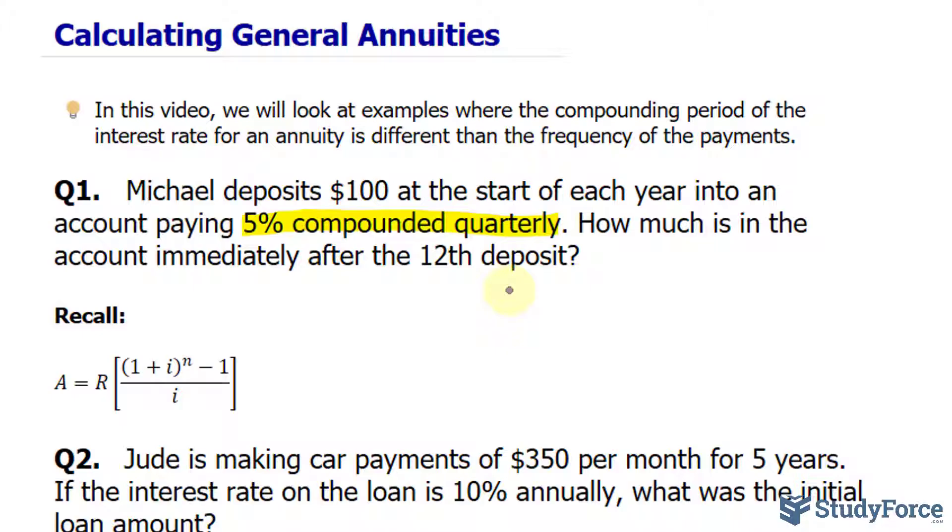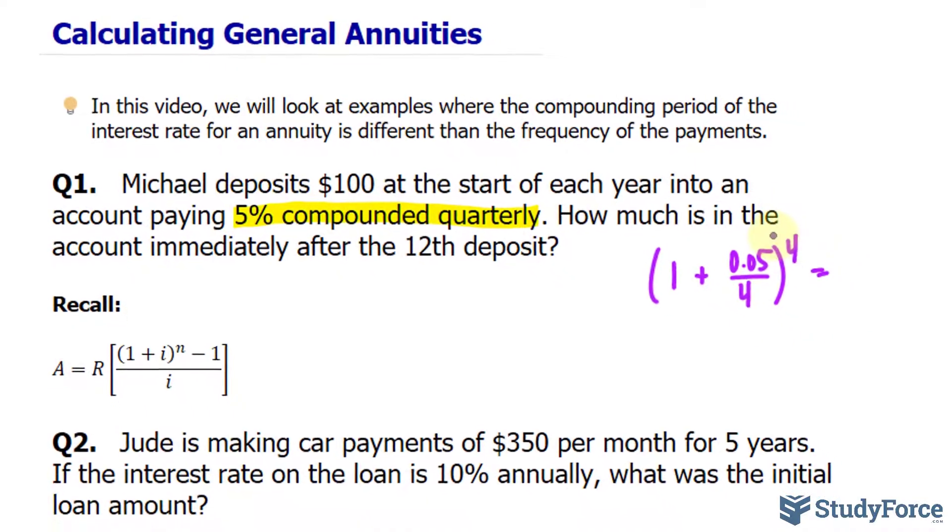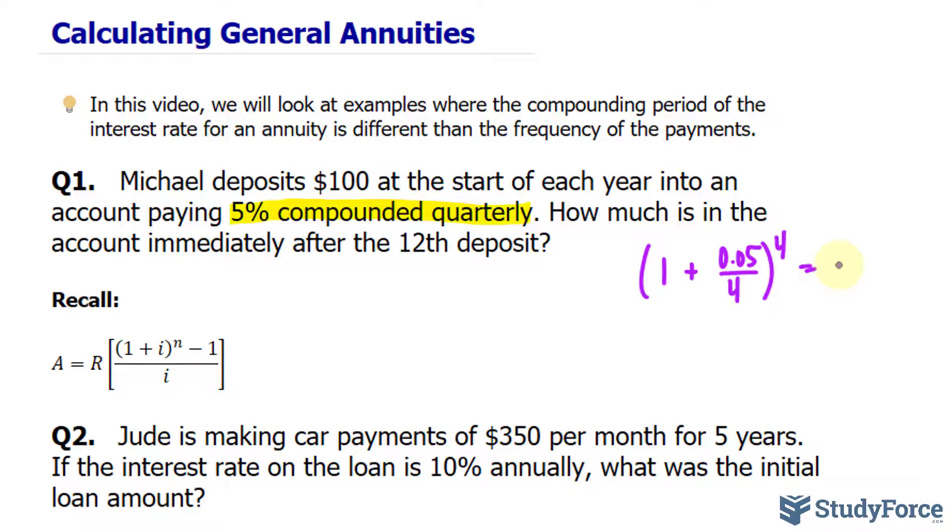In this particular case, that's called the effective annual rate. To do this, we set up the following equation where we write in parentheses 1 plus 0.05 divided by 4, and raise it to the power of 4. On the right side, we'll be solving for i, which is our new interest rate compounded annually.